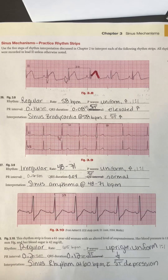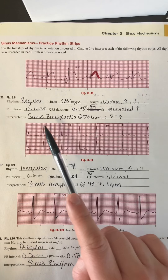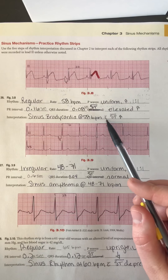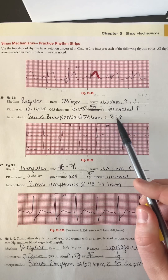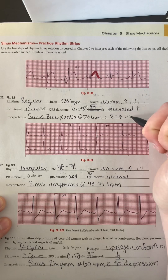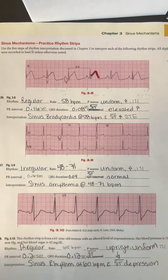So the name of this first rhythm is sinus bradycardia at 58 beats per minute. It's bradycardic because we're under 60. It is sinus because it is regular, we have P waves for every QRS complex, they're upright and uniform. I noted ST segment elevation — sometimes written as STE — whichever abbreviation you want to use is fine.